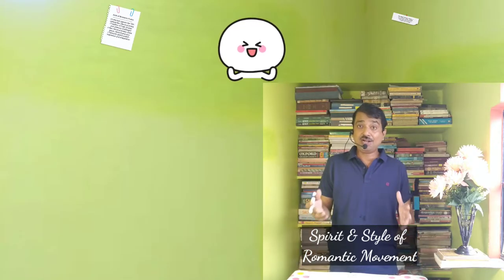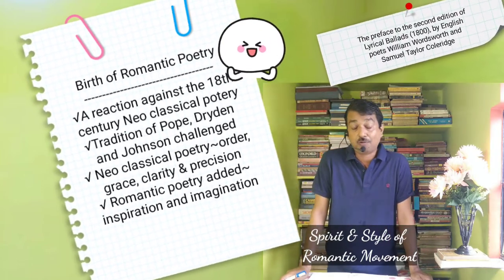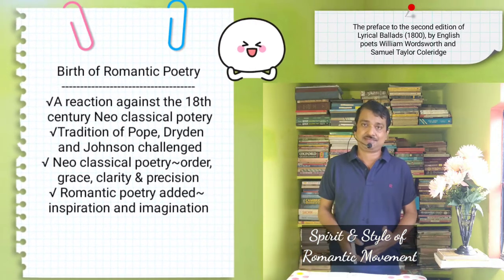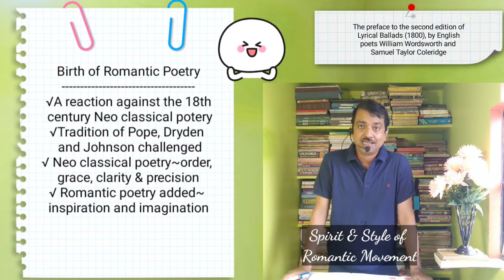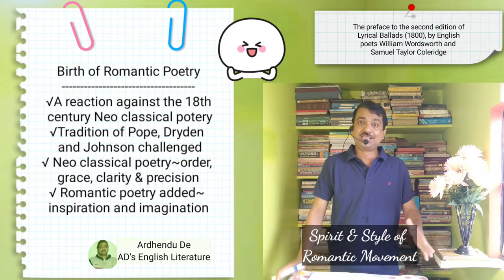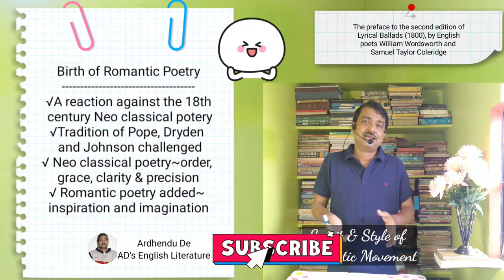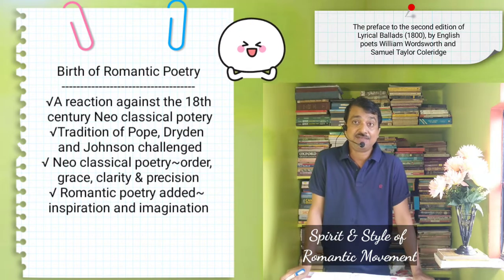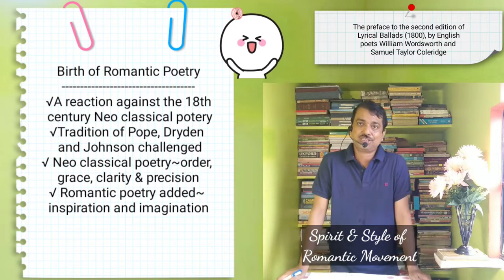The Romantic movement made a reaction against the 18th century tradition of Pope, Dryden, and Johnson, both in matter and manner. It made a revolt against the so-called classical poetry which delighted in order, decorum, and decency with grace, clarity, and precision — and forgot that these alone do not make true poetry, that is inspiration and imagination. That is the key point that they missed, according to these new Romantics.